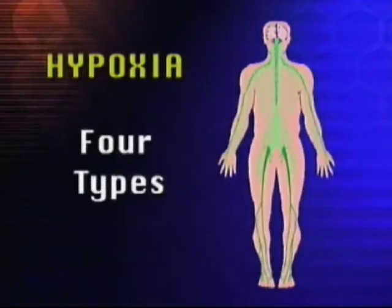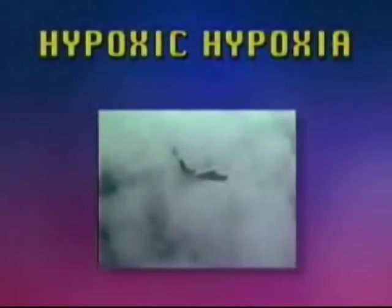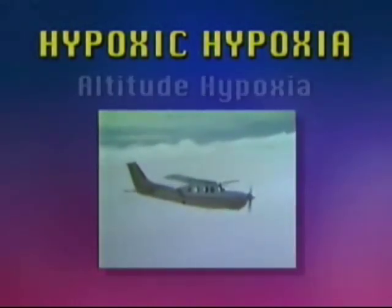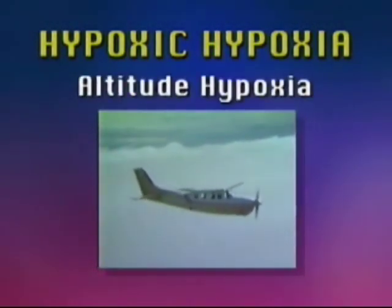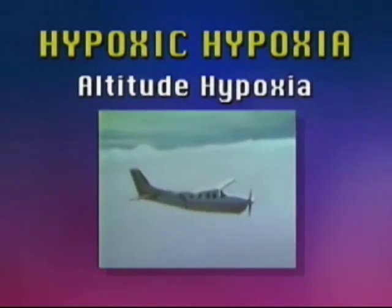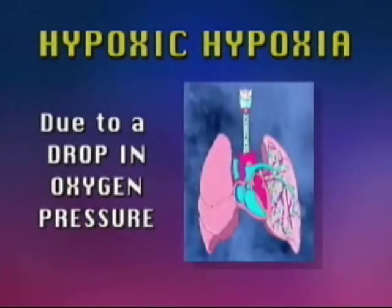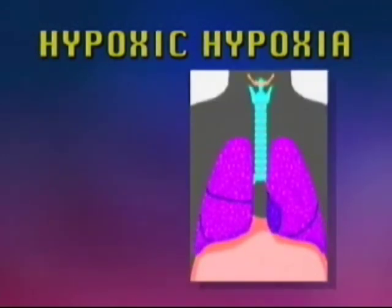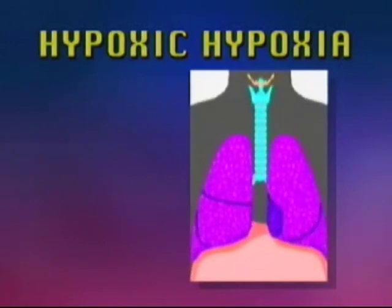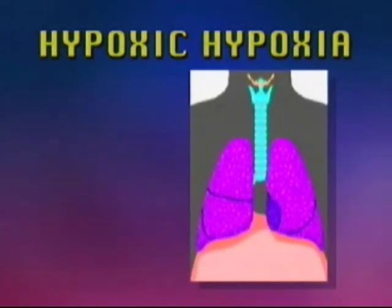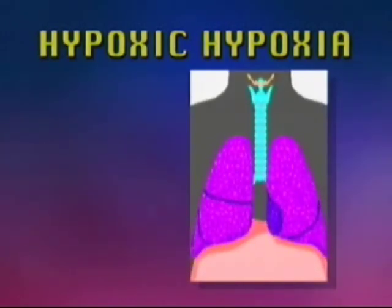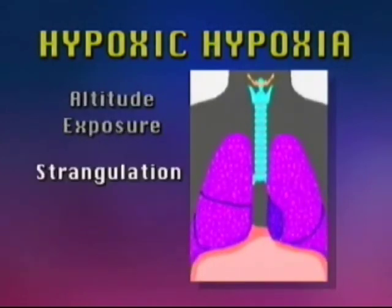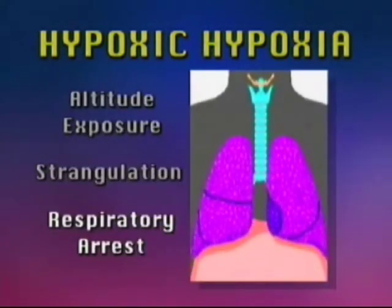There are four types of hypoxia. Hypoxic hypoxia, also known as altitude hypoxia, is the most common form of hypoxia in aviation and occurs due to a drop in oxygen pressure at the lung level. Hypoxic hypoxia can be caused by a decrease in the pressure of oxygen in the inspired air, resulting from altitude exposure, strangulation, or respiratory arrest.